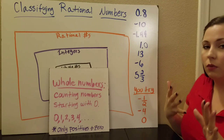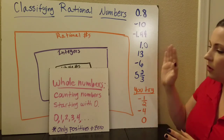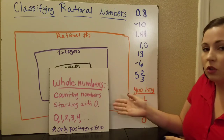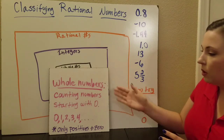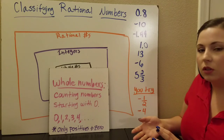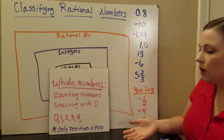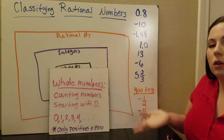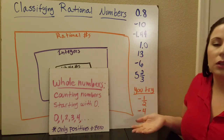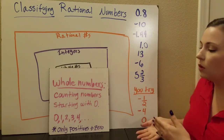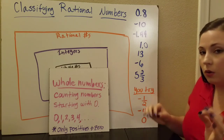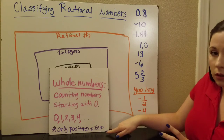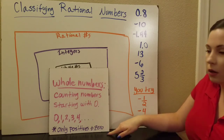First we're going to start off with some definitions. You'll need to make sure to write these down. Whole numbers are the counting numbers starting with zero — zero, one, two, three, four, and so on. They're the basic numbers that you learn first. Whole numbers are only the positives and zero.